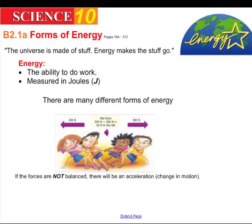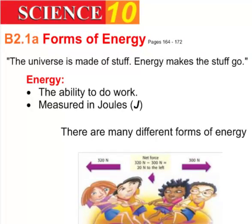Let's think of the universe being made of stuff or matter. Energy is what makes the stuff go—it makes matter move or transform itself. We can define energy as the ability to do work. We measure it in amounts called joules, represented by a capital J, named after James Prescott Joule. There are many forms of energy, and we're going to show you some of them in this presentation.